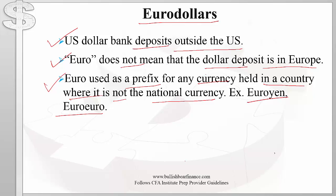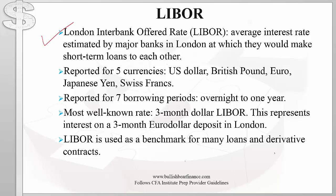LIBOR refers to the London Interbank Offered Rate. It is the average interest rate estimated by major banks based in London at which they would make short-term loans to each other. For example, suppose Barclays Bank wants to borrow money from Standard Chartered, and both are based in London — they would probably refer to the LIBOR. It is important to note that there is no single LIBOR rate.